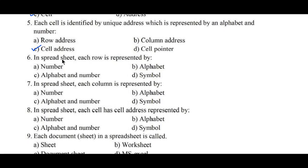Question number 6: In a spreadsheet, each row is represented by a number. Question number 7: In a spreadsheet, each column is represented by — Option A: number, B: alphabet, C: alphabet and number, D: symbol. Option B, alphabet, is the right answer.